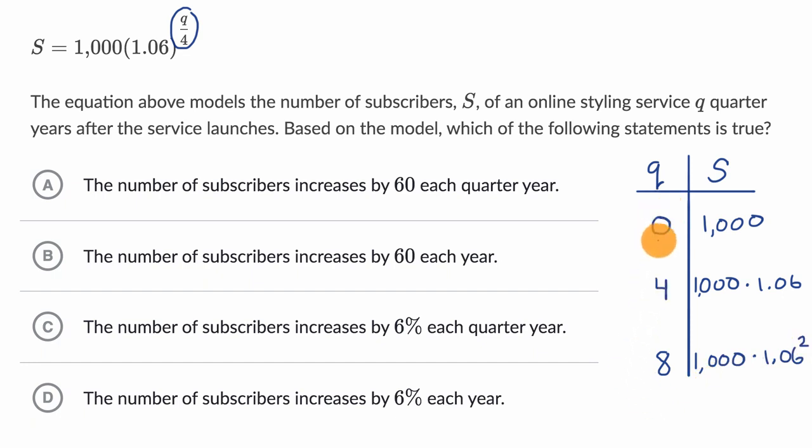So let's think about how it's growing at least every four quarters, which is the same thing as one year. Well, it looks like we are multiplying by 1.06, or another way of thinking about it is we are increasing by 6%. Once again, when we go from quarter four to quarter eight,